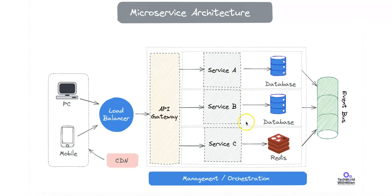The API gateway also offers SSL termination, meaning it terminates the HTTPS connection and handles the encryption and decryption of requests to reduce overhead on the microservices. Additionally, it provides request aggregation, sometimes aggregating multiple service responses into one payload for efficiency purposes. Examples of API gateways include AWS API Gateway, Kong, and NGINX.